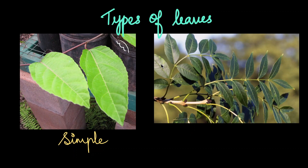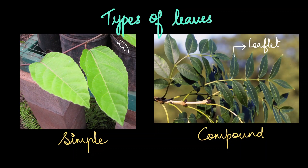The other type is called a compound leaf. In a compound leaf, the incision has reached till the midrib and has given rise to a smaller leaf, which is called a leaflet. Irrespective of whether it is a simple leaf or a compound leaf, we can see that there is a bud present in the axil of the petiole. But this bud is not present in the case of a leaflet.